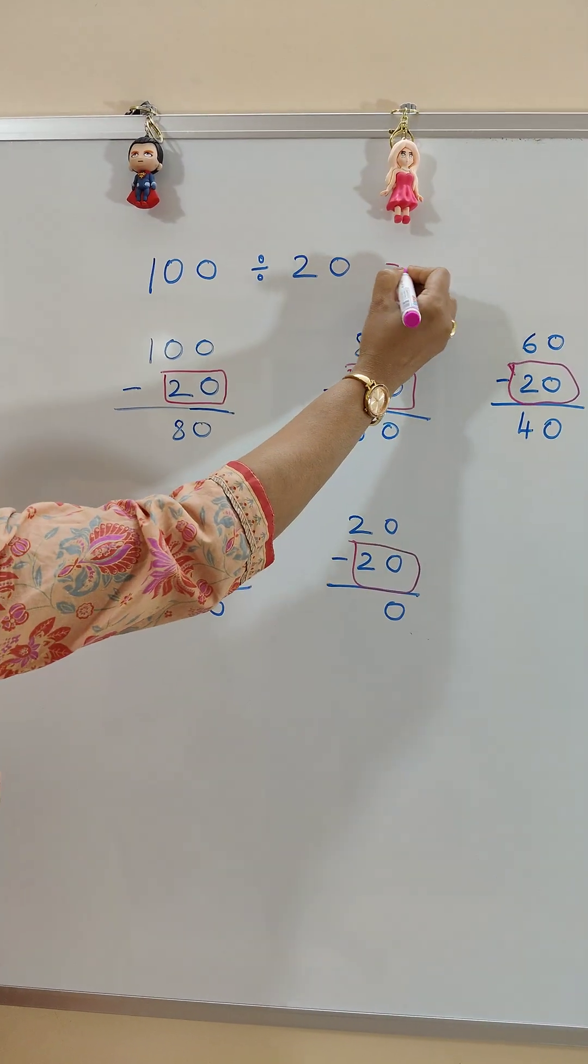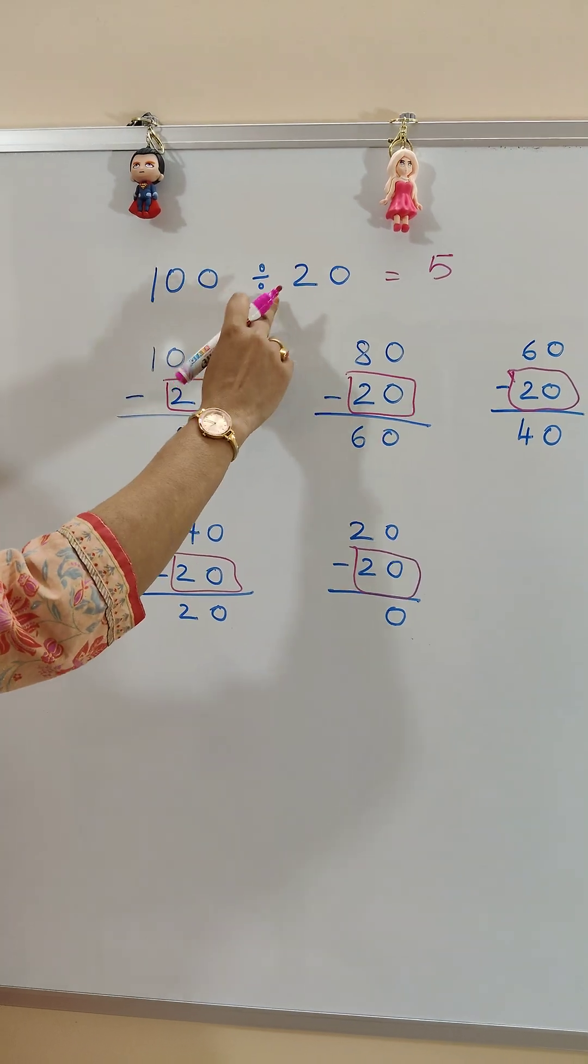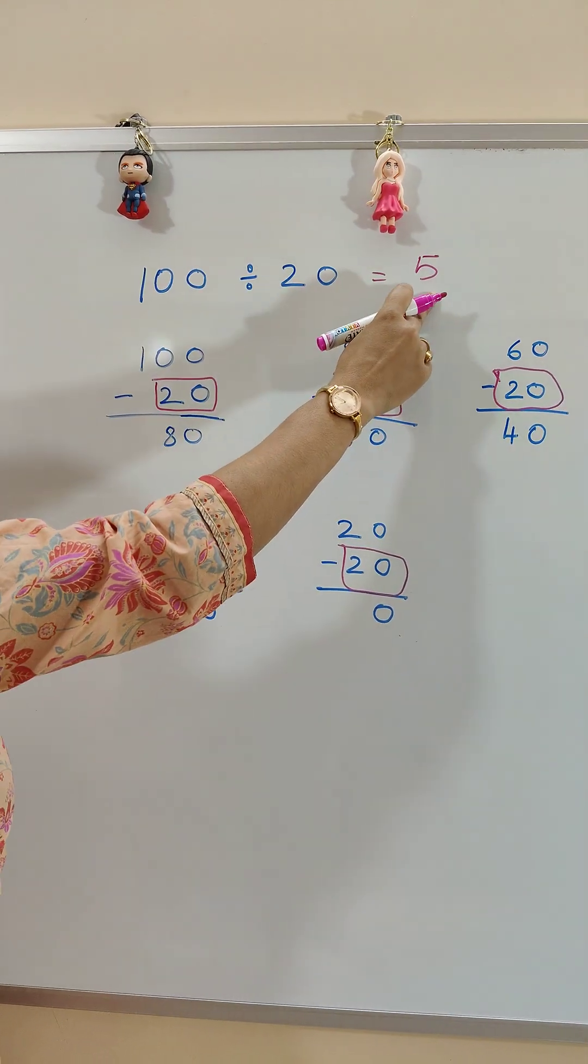So the quotient will be 5. 100 divided by 20 is equal to 5.